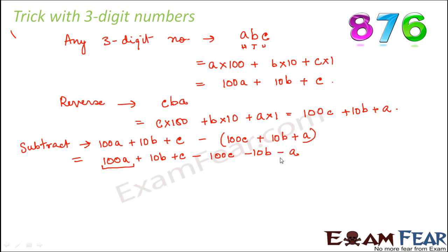So 100A minus A, same coefficient, this is 99A. Again, 10B minus 10B, same coefficient, so they cancel out to make 0. Now C minus 100C would be -99C. So this can be written as 99×(A - C).